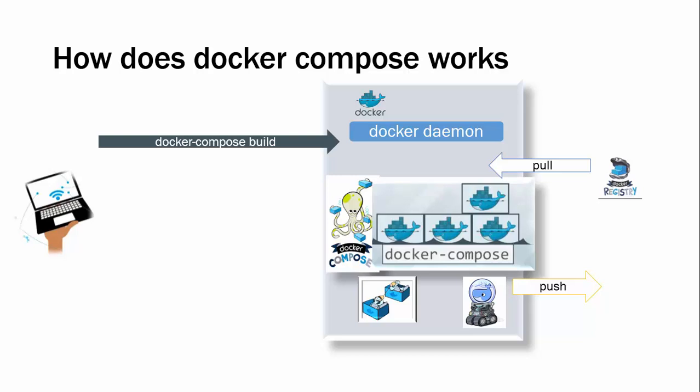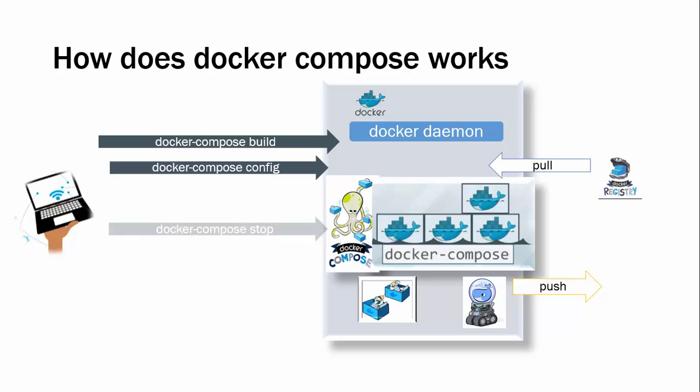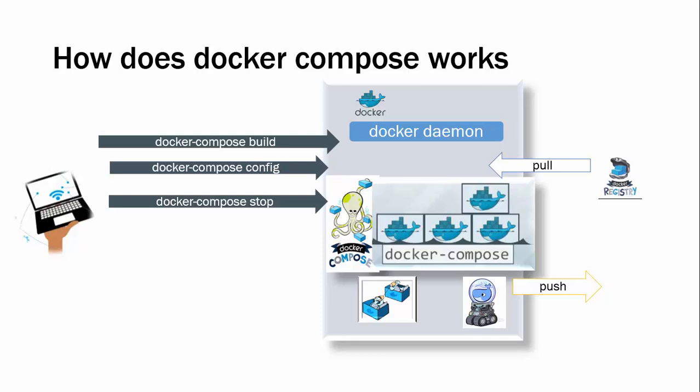The build script — that is the Dockerfile — will be executed on top of the Docker daemon where it is going to have the Docker engine. Whatever you write in Docker Compose is in a YAML file, and that can be validated using docker-compose config, just like apache2ctl -t.